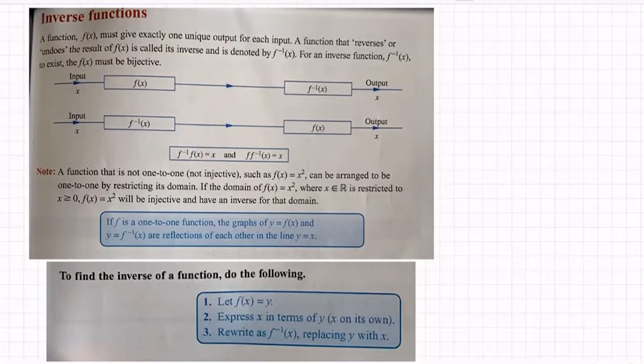A function that is not one-to-one, so not injective, such as x squared, can be arranged to be one-to-one by restricting its domain. This is what I was trying to explain in the last session where I was saying if you restrict your outputs or restrict your inputs, you might be able to set up a function that would have an inverse function.